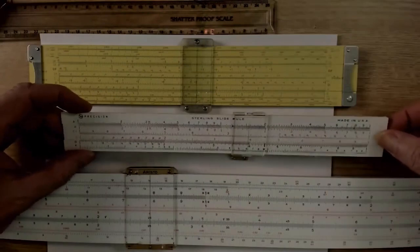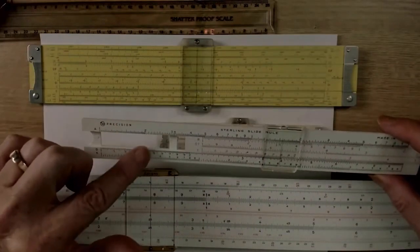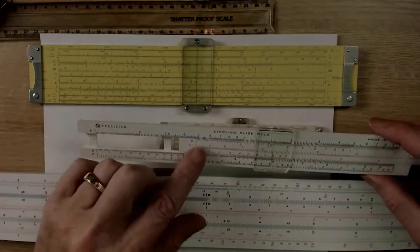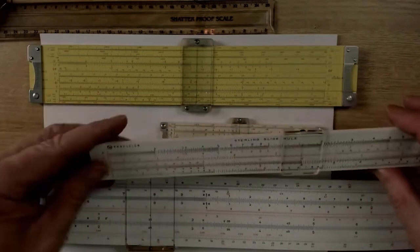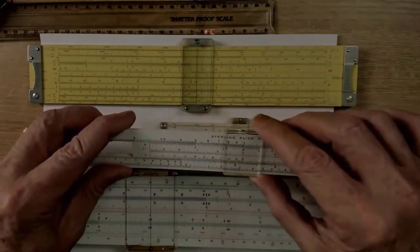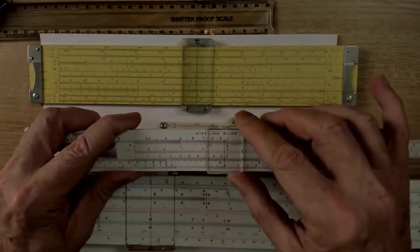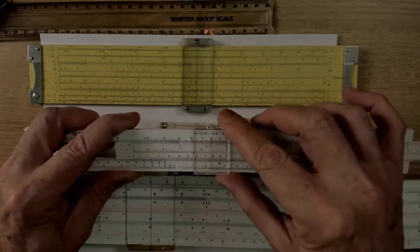Now, there are several parts to a slide rule. The first part is the body of the slide rule, which does not move. Then, of course, you have the slide in the middle. Then you have a movable piece of plastic or glass called a cursor, and on that cursor, you'll have what's called a hairline, which helps you line up numbers.